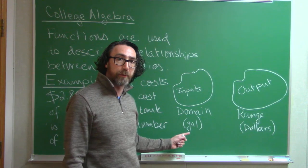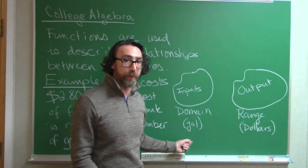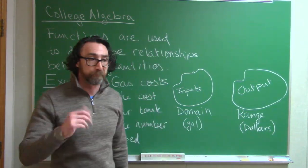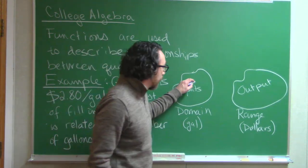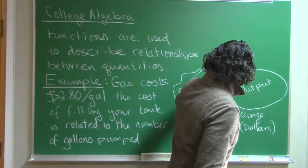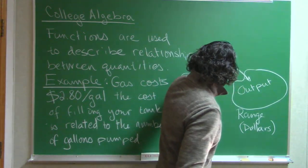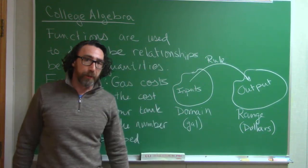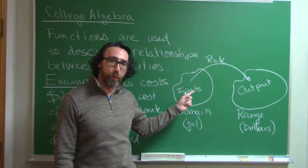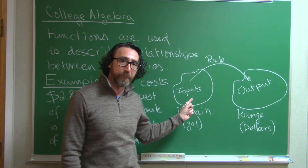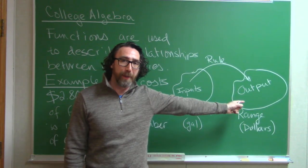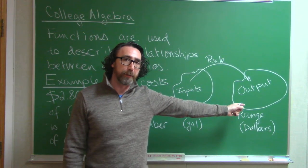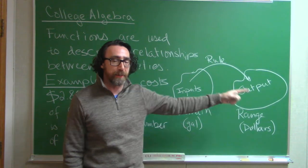So your input is number of gallons, your output is cost in dollars. And then we have a rule telling us how to take one of these input values and figure out what output value is related to that input value.